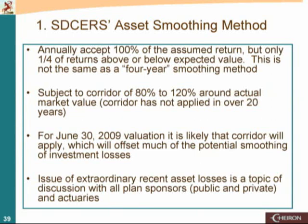And then, just as an appendix, we've got examples on how your asset smoothing works, an example on negative amortization, and detailed projections for each plan sponsor on the UAL and the ARC. Your current smoothing method annually will accept 100% of what the assumed rate of return is, but only one-fourth of the difference between the actual return and the assumed rate. It's presently subject to an 81-20 corridor, and as we've been saying all morning, it will apply to the June 30, 2009 results.